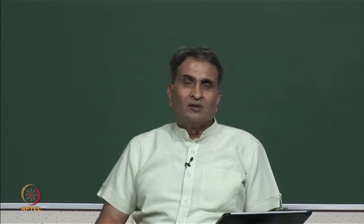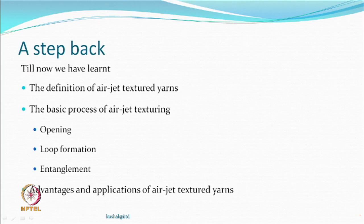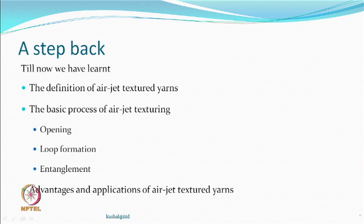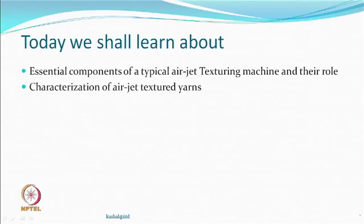We are continuing with air jet texturing. Last time we covered some definitions of air jet textured yarns, and we noted there are at least three major processes: opening of the filaments, loop formation, and entanglement. These three things must happen before an air jet textured yarn is produced. We also discussed some advantages in application of air jet textured yarns. Today we will learn about the essential components of a typical air jet texturing machine and how to characterize an air jet textured yarn.